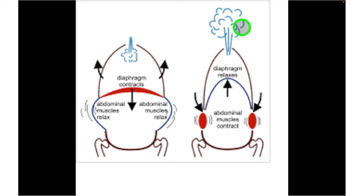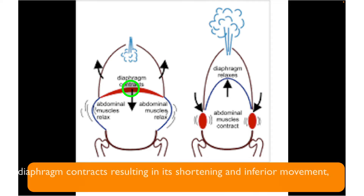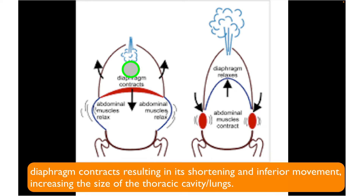The opposite allows for inhalation. When the diaphragm contracts, it shortens and depresses — moving inferiorly — increasing the volume of the thoracic cavity and accordingly the volume of the lungs. An increased lung volume decreases pressure, and once that pressure is lower than atmospheric pressure, air rushes into the lungs.